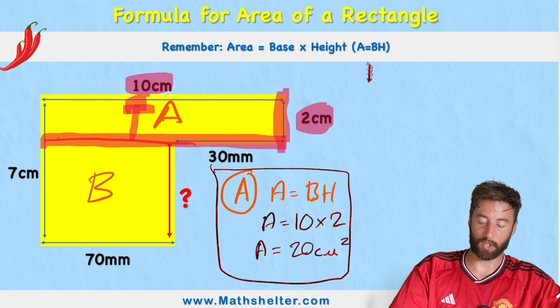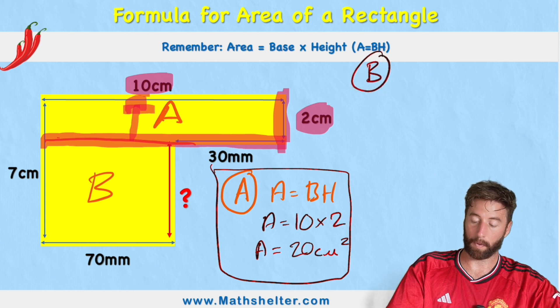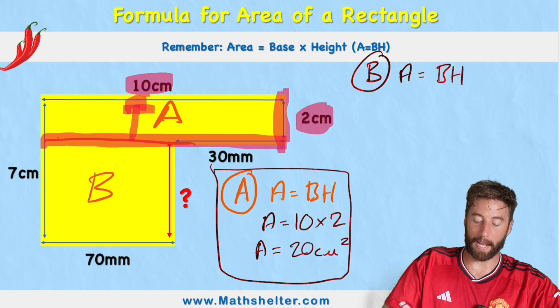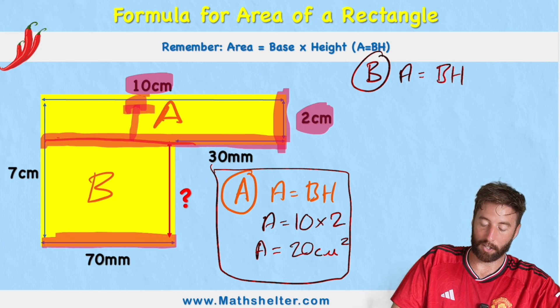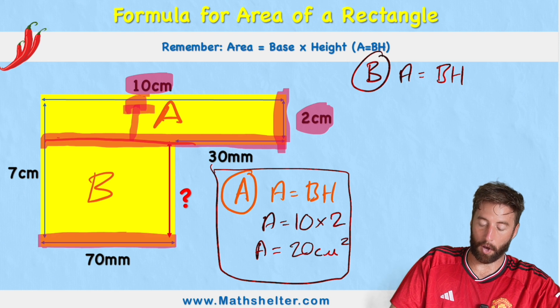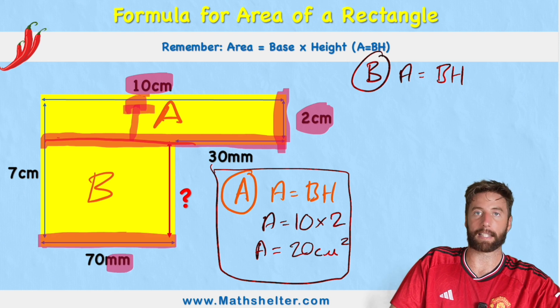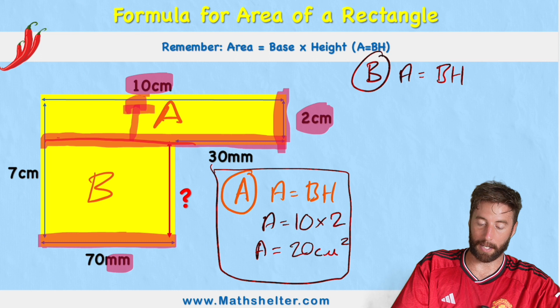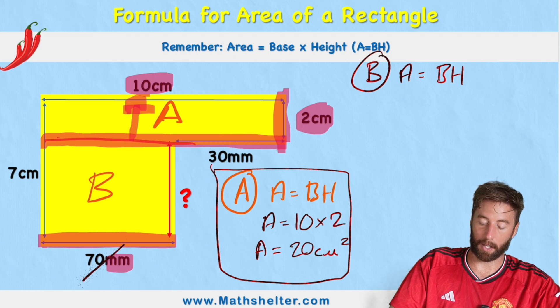Now we need to do the same to shape B. Well, let's start with our formula. Area equals base times height. And now let's look for our base. We can see our base is just here. But uh-oh, I'm now in millimeters. So I need to convert this back to centimeters. So 70 millimeters becomes 7 centimeters.